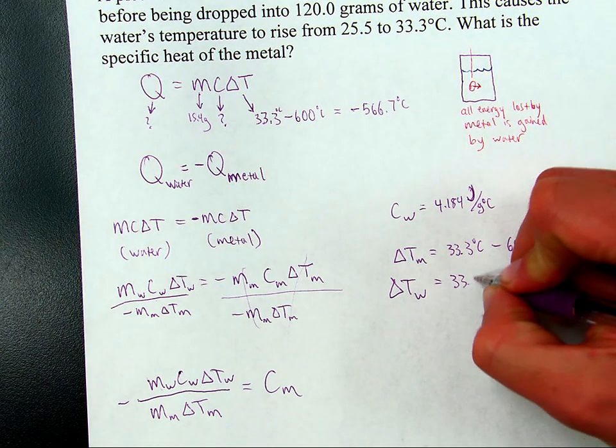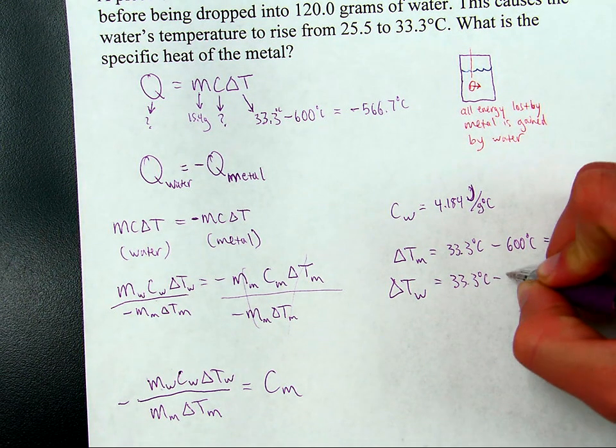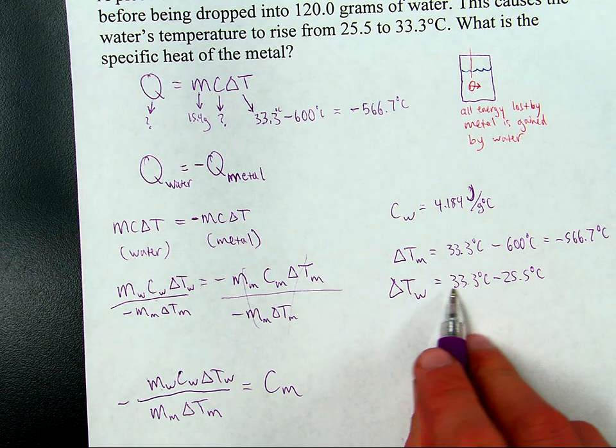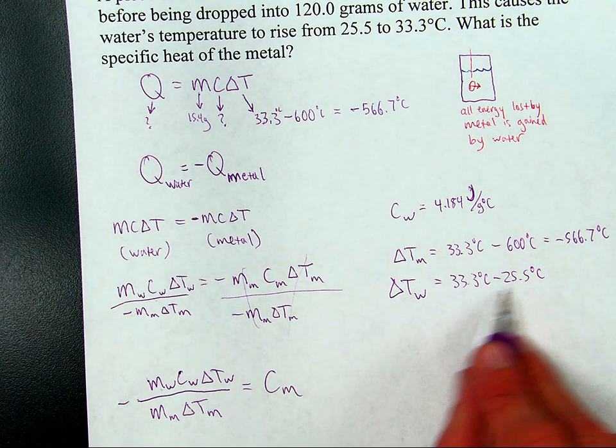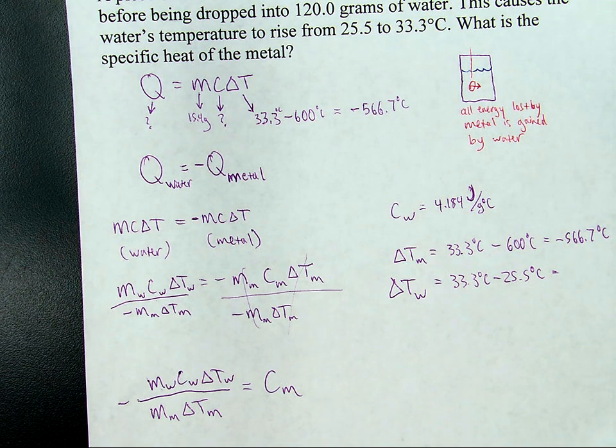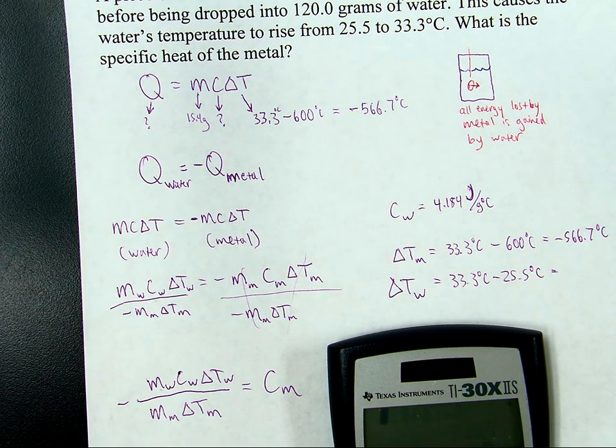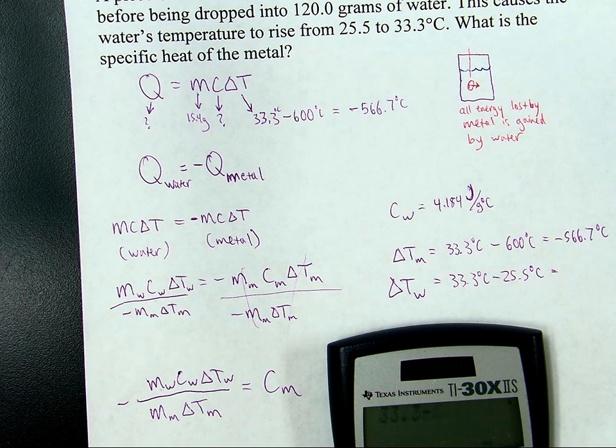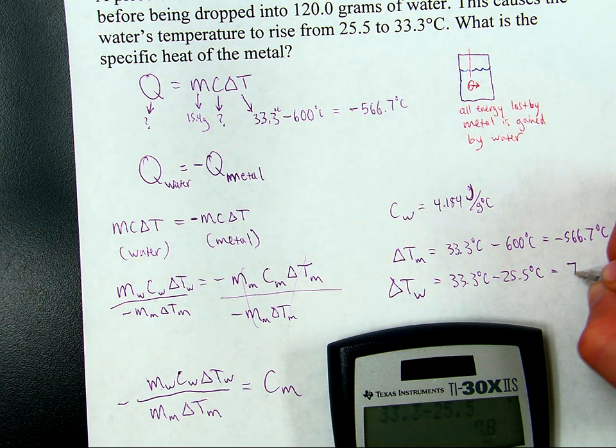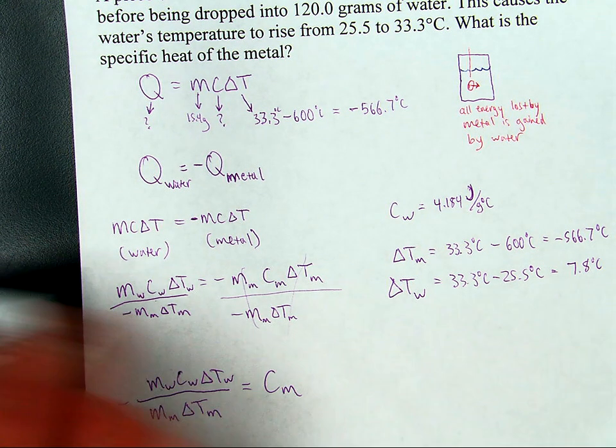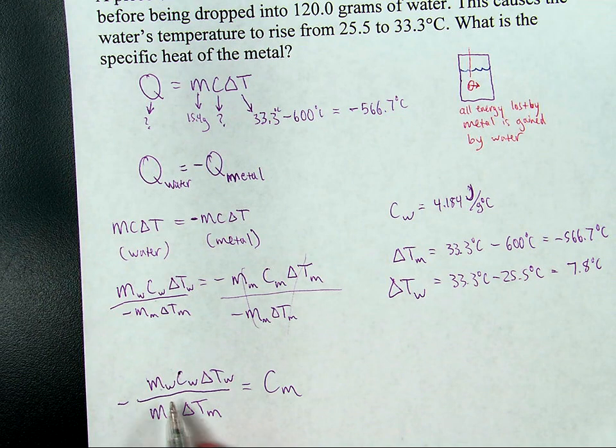The delta T for water is going to be positive because the water's temperature went up from 25.5 to 33.3. So 33.3 degrees Celsius minus 25.5. How did I know to do it in this order? I know the temperature went up, so it needs to be positive, and this will give me a positive number. 33.3 minus 25.5, positive 7.8 degrees Celsius temperature change for the water. Great. So that means I'm ready to plug in these numbers.